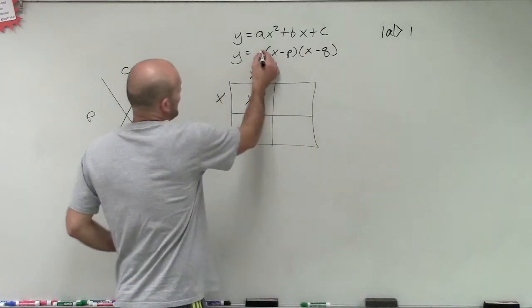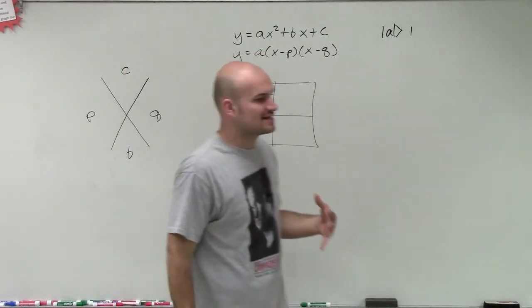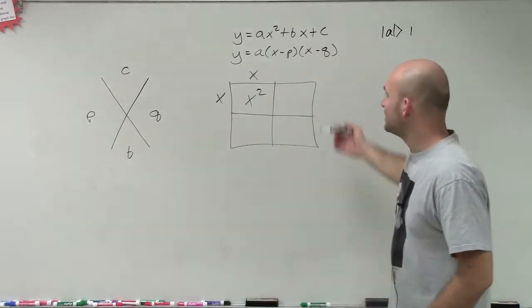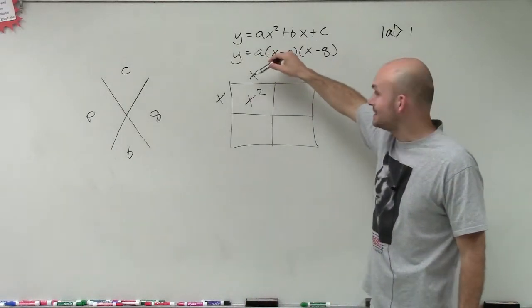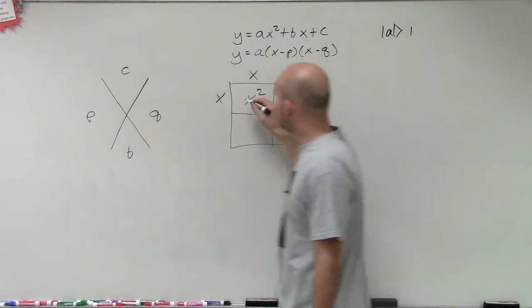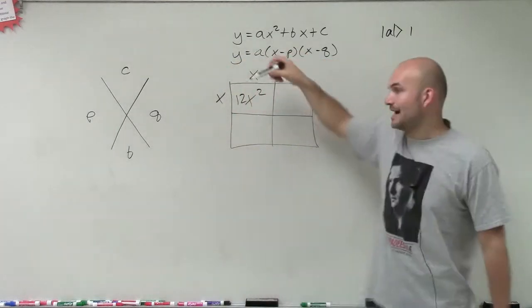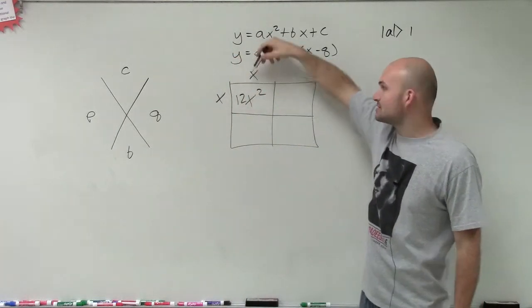But now, we actually are going to have an a. And so our factoring technique is going to be a little bit different because we're going to have different ways. Let's say we have an a, let's say this is 12. Well, it's not going to be x and x. It could be 4 times 3.